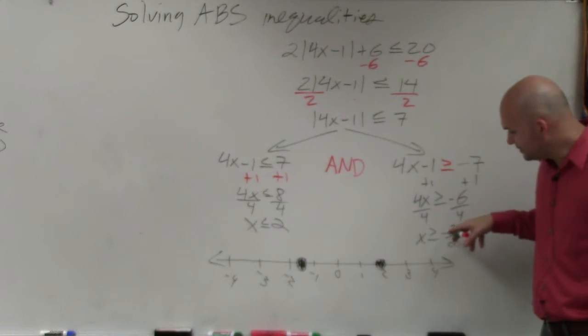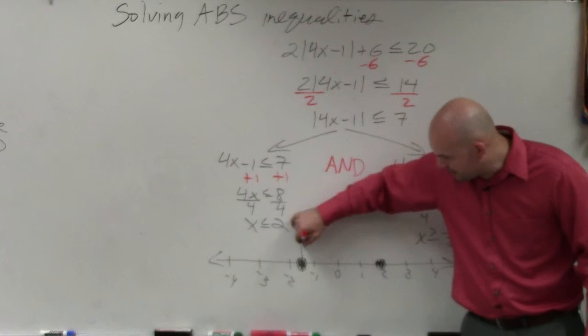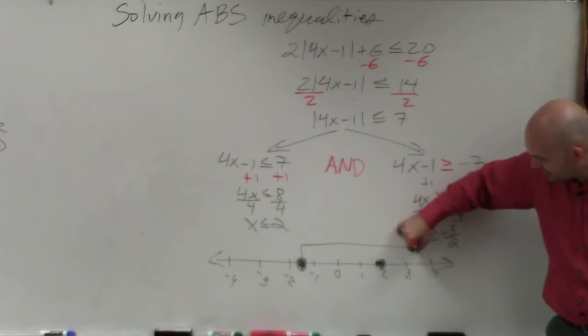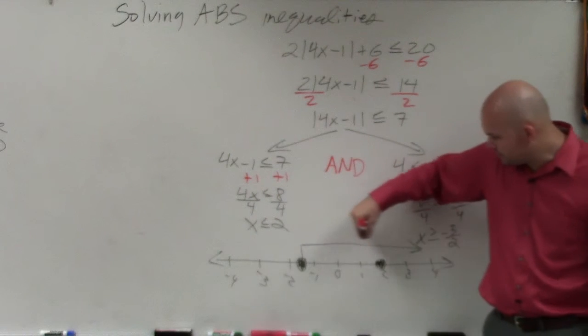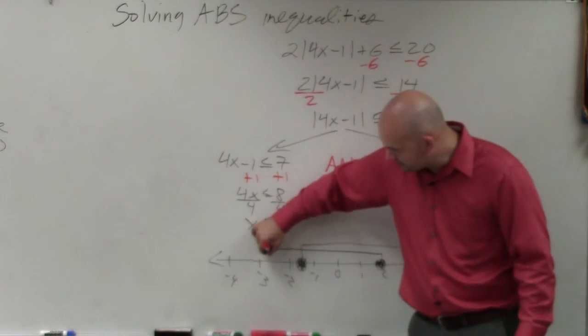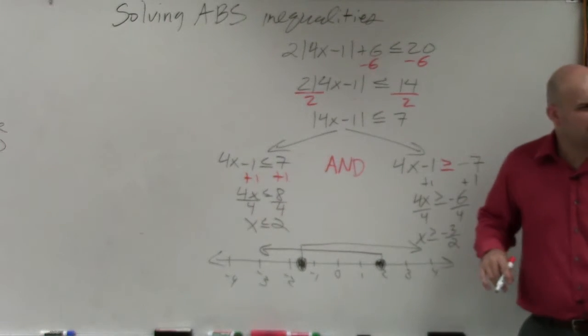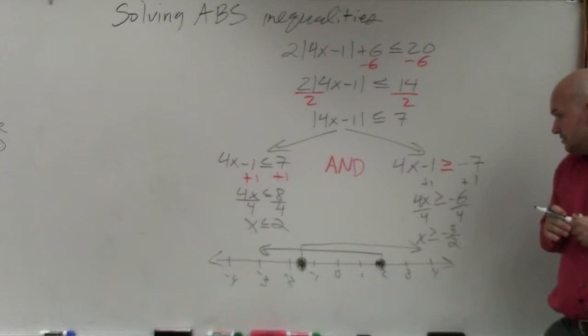All right. So x is greater than or equal to negative 3 halves. Instead of graphing on the line, I'm just going to kind of go up and say that that's going to be all the values going to the right. For x is less than or equal to 2, instead of graphing on the line, I know that's going to be all the values going to the left. And this might be a better way to visualize. You guys can see that. Can we make the arrows going down together if they don't intersect?